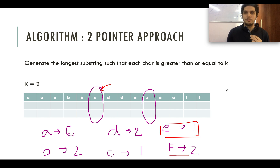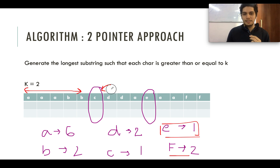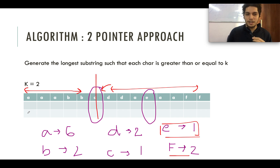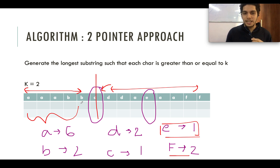These are the points of split we need to identify. We split the string at those points and recheck each part. To implement this, we store two variables: start and end. We iterate through the complete string, and as soon as we find a position where the frequency is less than K and greater than zero, that's our split point. We recursively process the smaller substring and then increment the start pointer to continue with the second part.